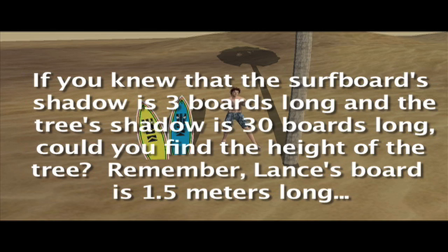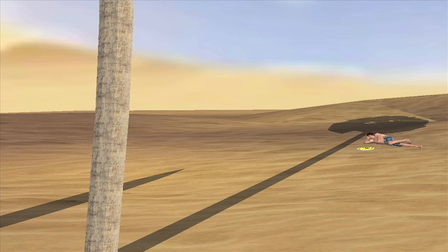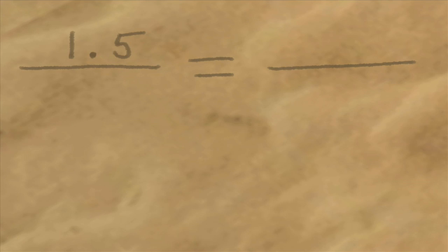All right, ready? If we can measure the shadows of the tree and the board at about the same time, we can find that they have a proportional relationship with the objects that cast them. In other words, the length of the board — which we know is 1.5 meters — to its shadow, is proportional to the tree to its shadow. Now we just fill in the blanks. The board's length is 1.5 meters, and its shadow was 3 boards long, or 4.5 meters. Down here, we know the tree's shadow is 30 boards long, or 45 meters. Up here, we don't know the tree height, so we can put in an X.